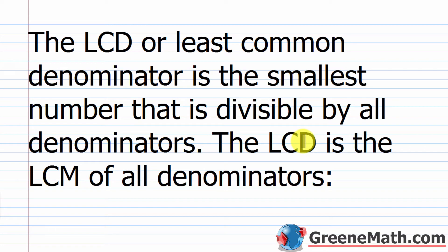The greatest common factor and the greatest common divisor are the same thing. If something is a factor, it's also a divisor. We're looking for the largest factor or divisor of a group of numbers. The GCF or GCD is generally going to be a smaller number, and the LCM or LCD is going to be a larger number.